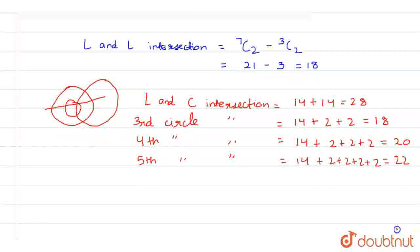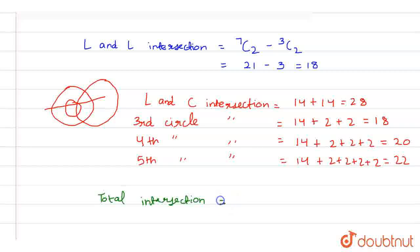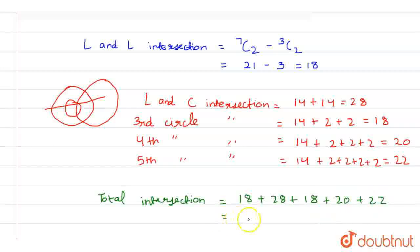Now we find the total number of intersection points: total intersection equals 18 plus 28 plus 18 plus 20 plus 22, which equals 106. So this is our final answer. I hope you guys understand it. Thank you.